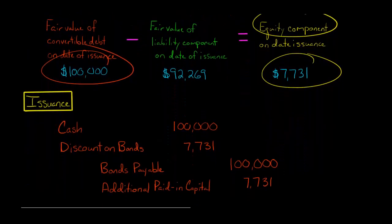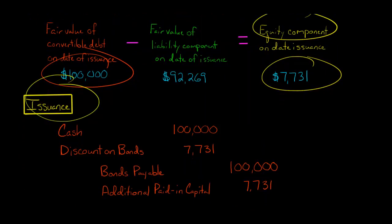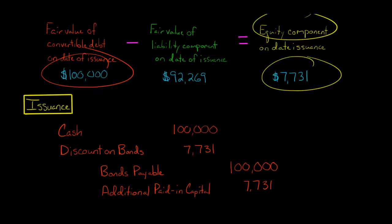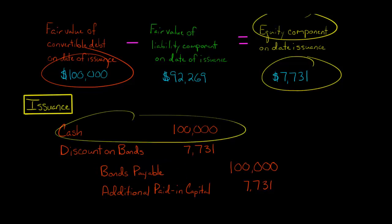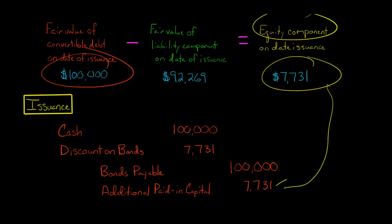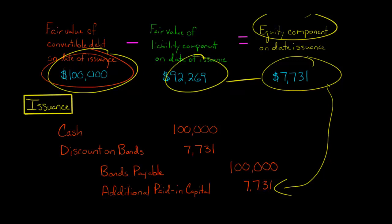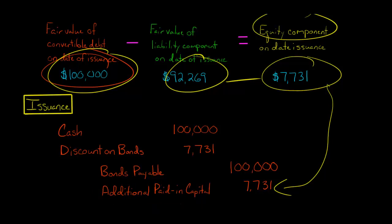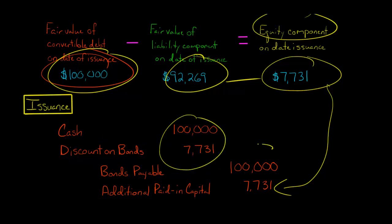Now, how do we make the journal entries? At the issuance date, the company receives $100,000 cash and promises to pay $100,000, so Bond Payable is credited for $100,000 and Cash is debited for $100,000. The equity component of $7,731 is credited to Additional Paid-In Capital — an equity account representing the conversion feature. To make the entry balance, we need a debit, which is a Discount on Bonds Payable. So our debits and credits balance.